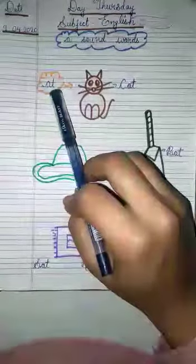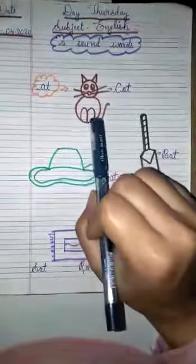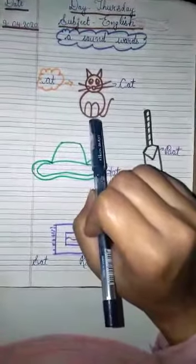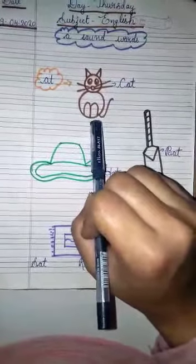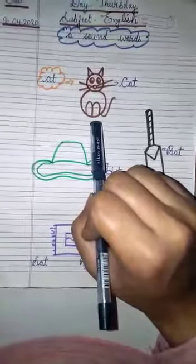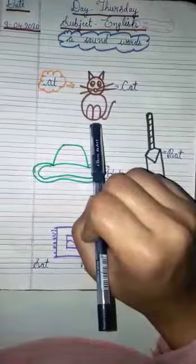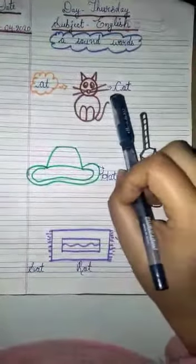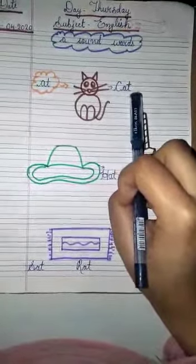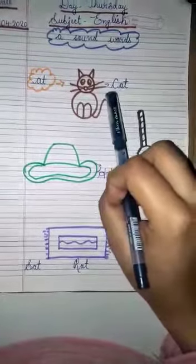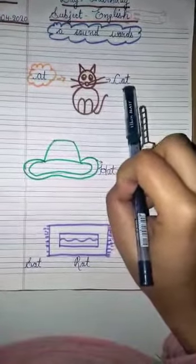Now, let us look at some of these pictures. I am pretty sure you all know what this is. This is a cat. And what is the spelling of cat? C-A-T, cat.